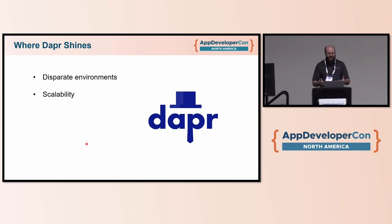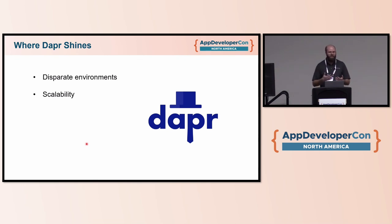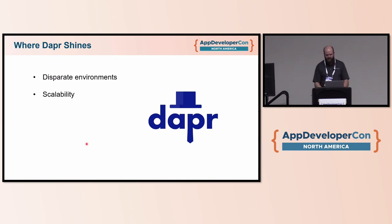DAPR is very scalable — it uses pluggable service discovery, and all these components are pluggable: swap in, swap out whatever you need. DAPR makes it easy to say you're scaling up or scaling out — where is my service located? You don't really have to worry about it. Just specify the name of the service you're trying to connect to and DAPR will figure out how to discover it.